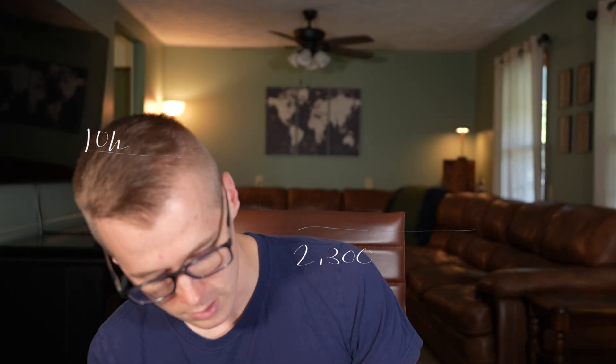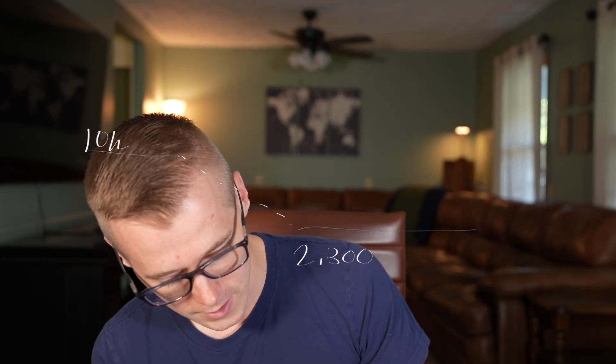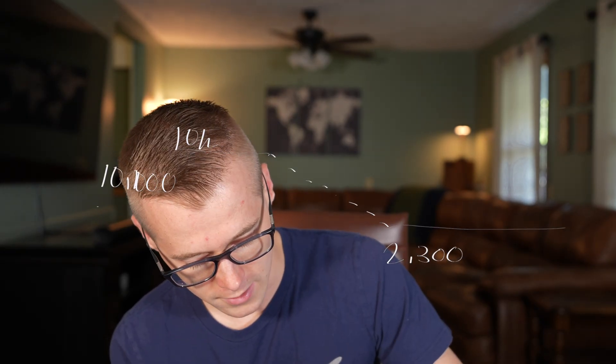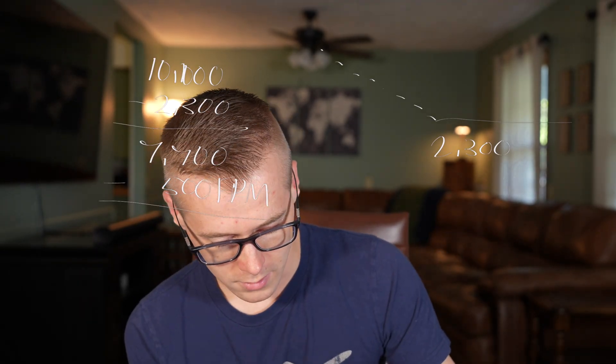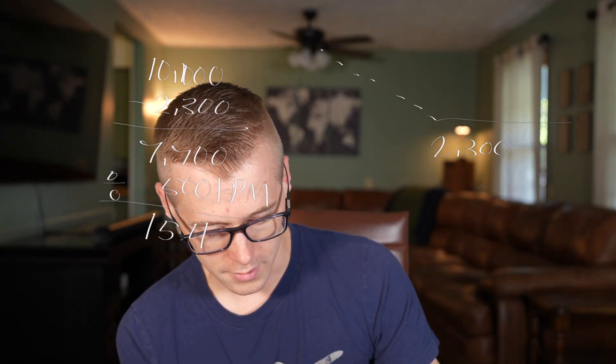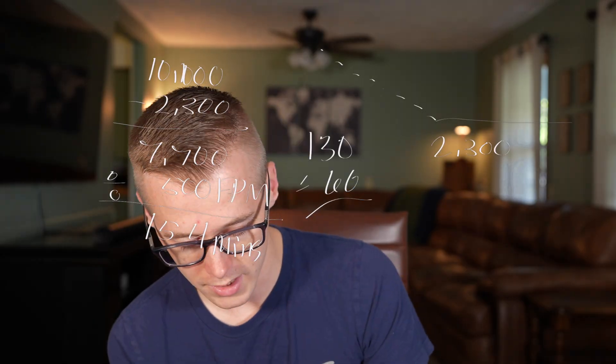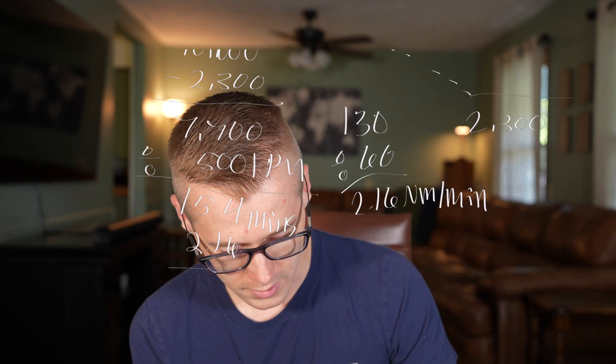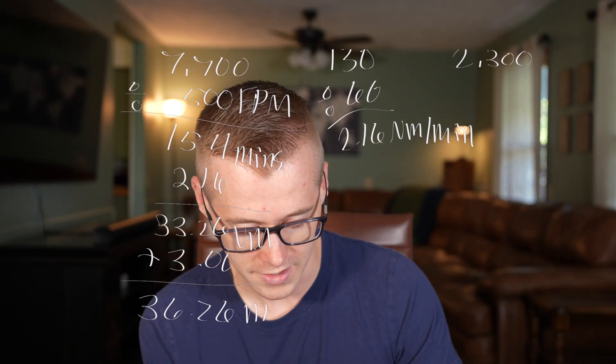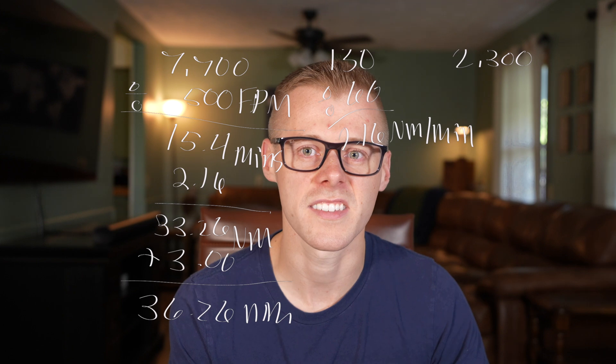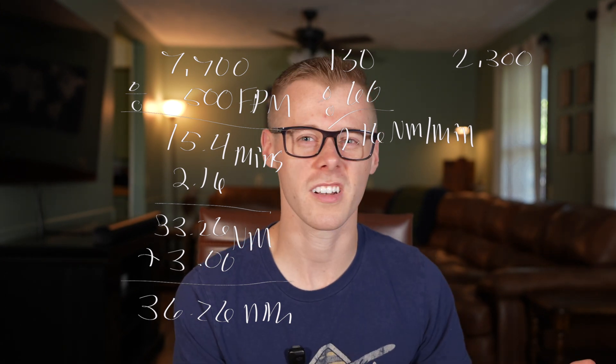Let's say that we are flying at 10,000 feet and we want to land at Lebanon, which is going to be at 2,300 feet. This area is going to signify our descent path. Easy.